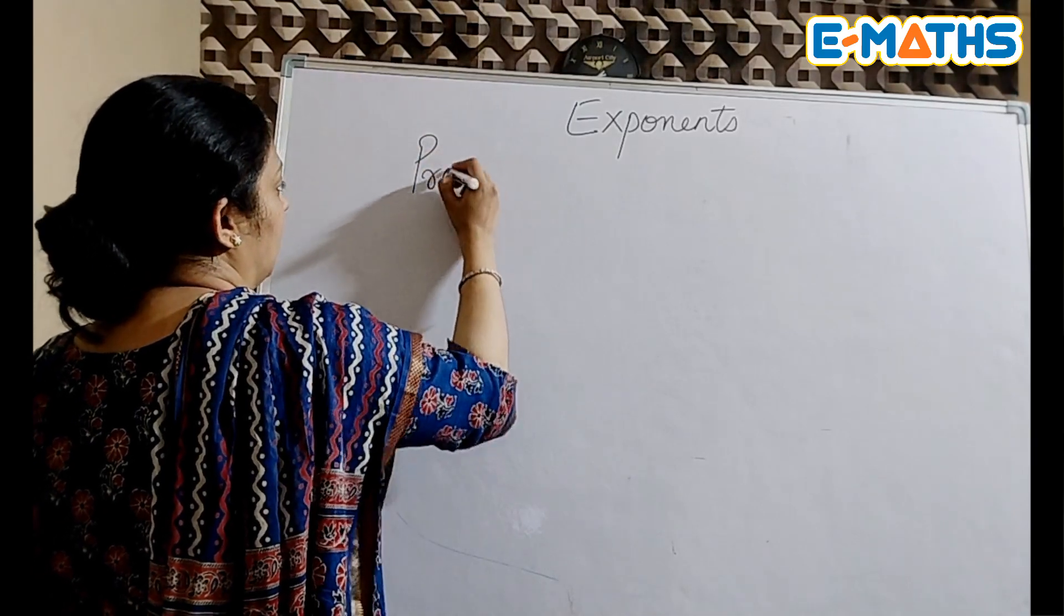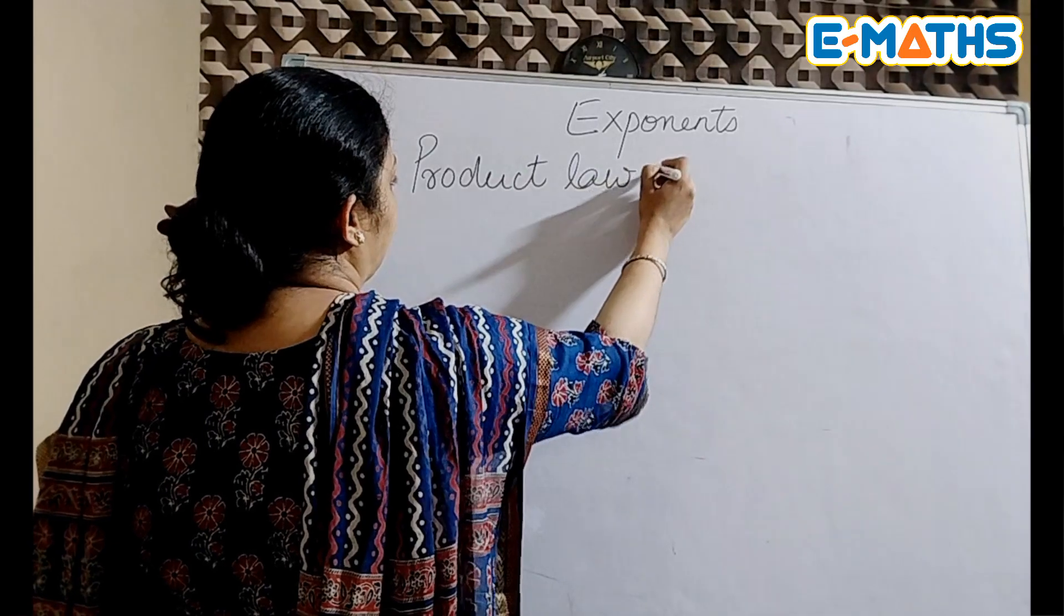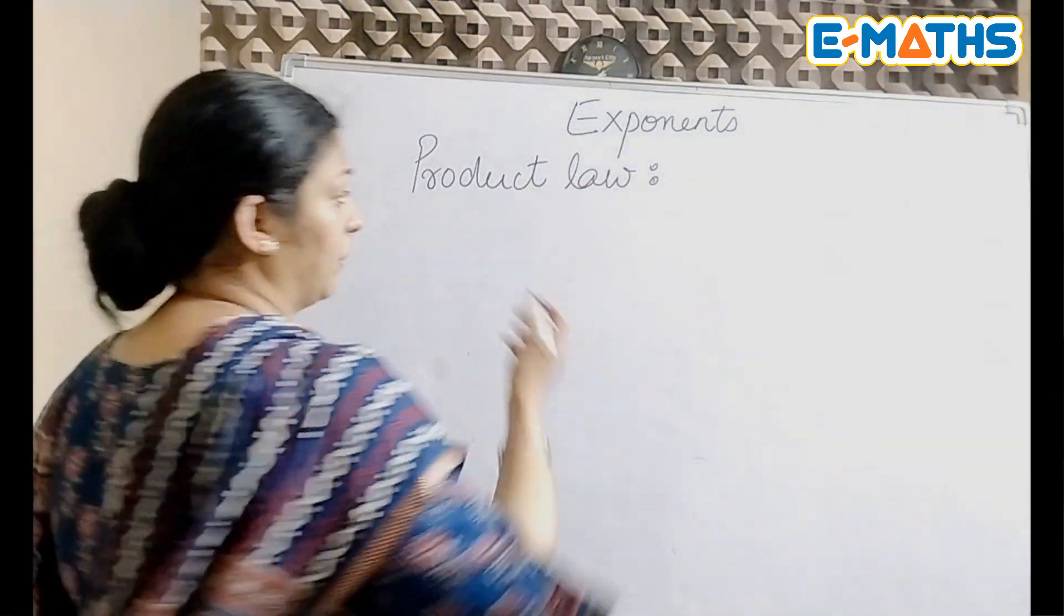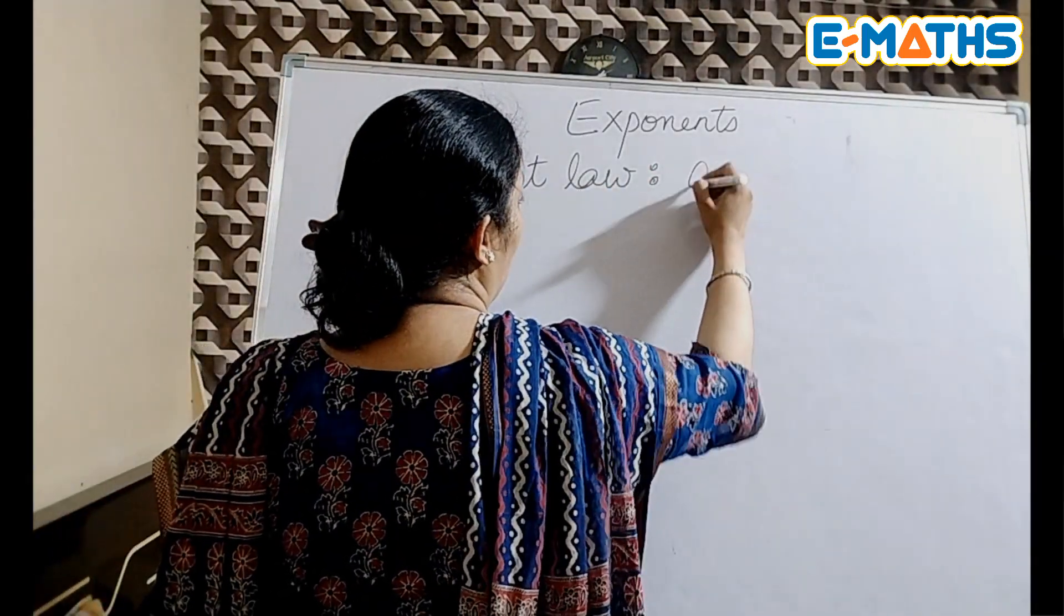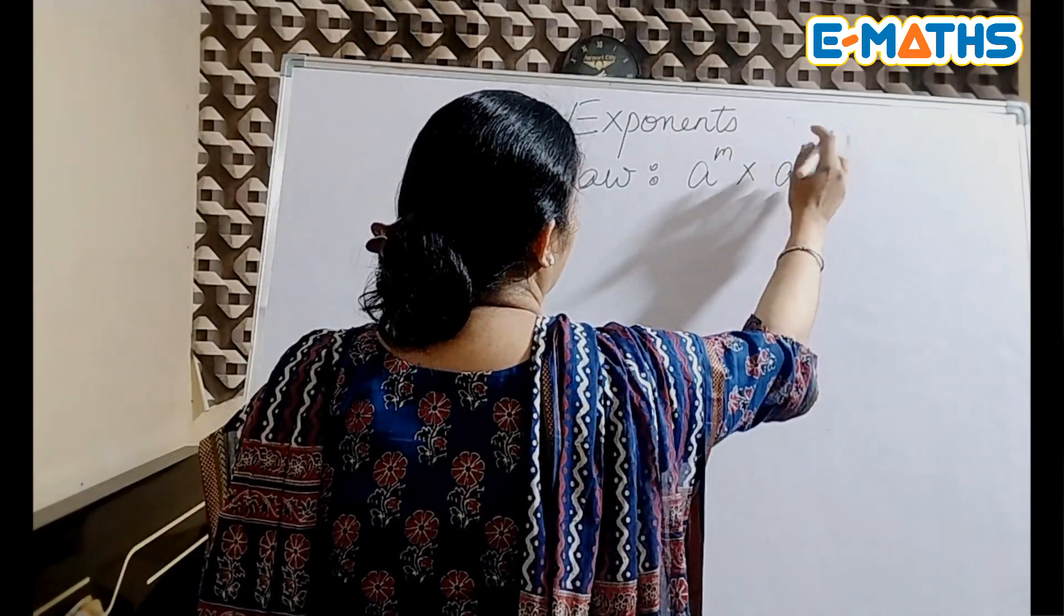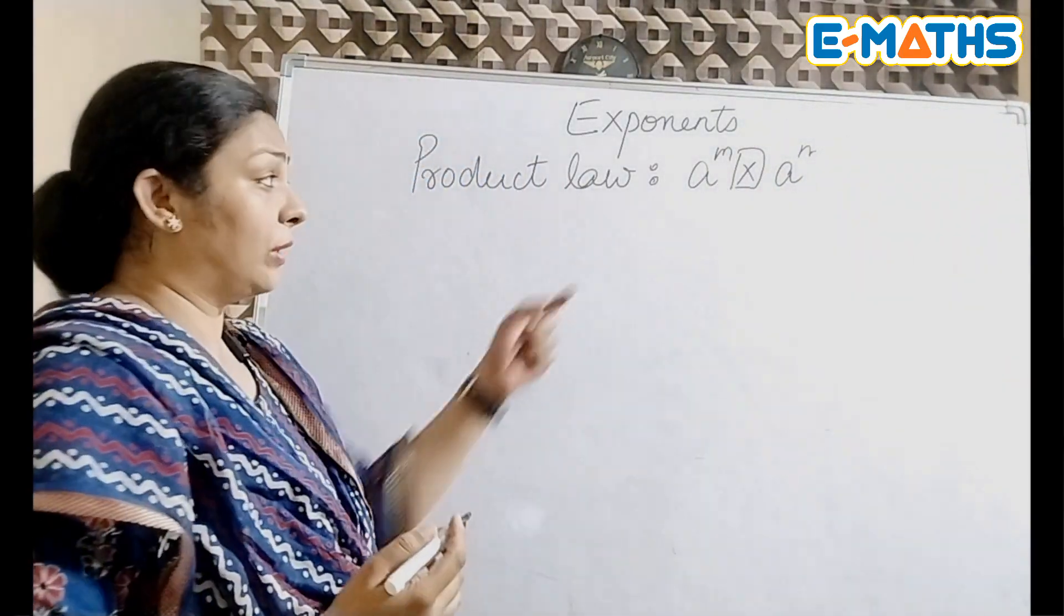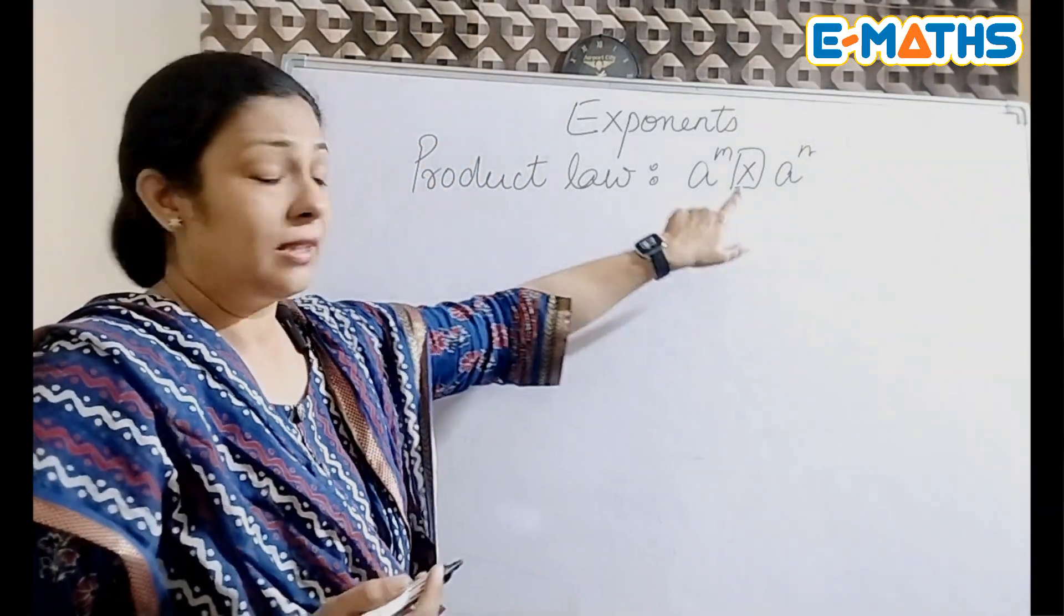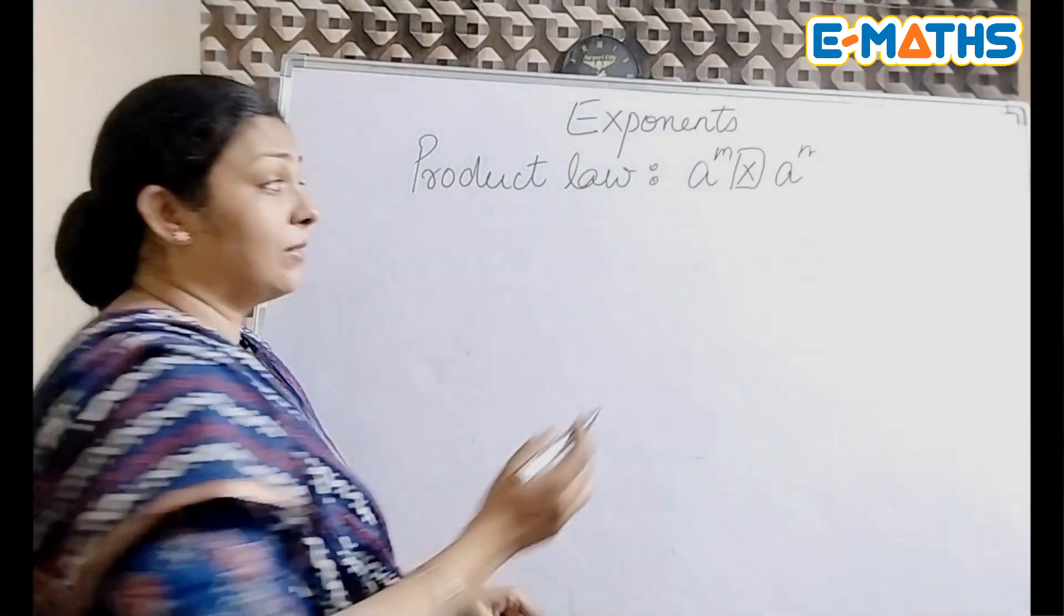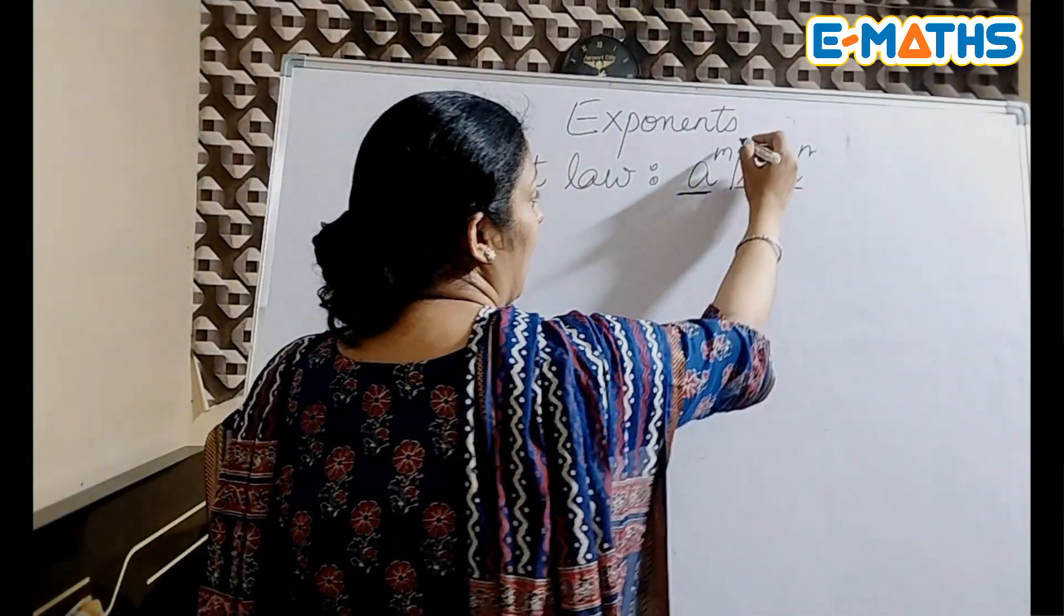The first law is the product law. Product law, as the name goes, is all about terms getting multiplied. You need to see if the terms have the same bases or not. So here, this is the base and this is the power.